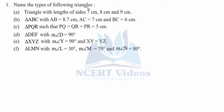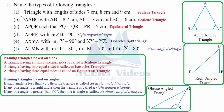First, name the types of the following triangles. Number one is a triangle with lengths of sides 7 centimeter, 8 centimeter, and 9 centimeter. Here you can see that the sides are all different. A triangle having all three unequal sides is called a scalene triangle. Therefore, this is a scalene triangle.